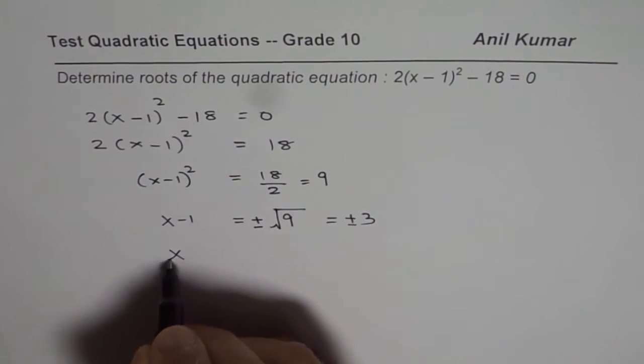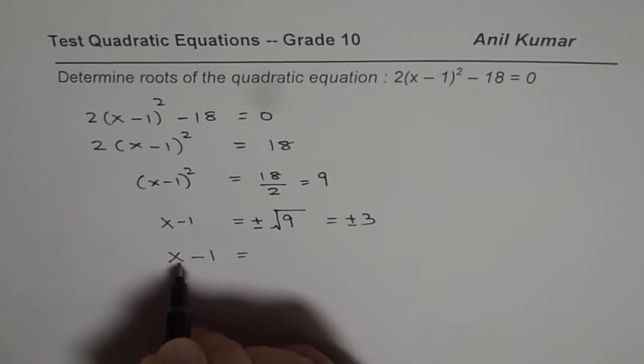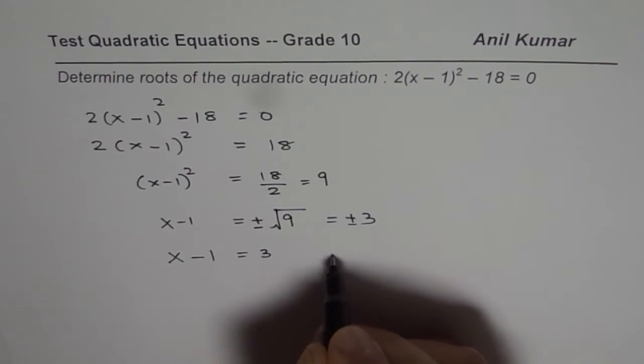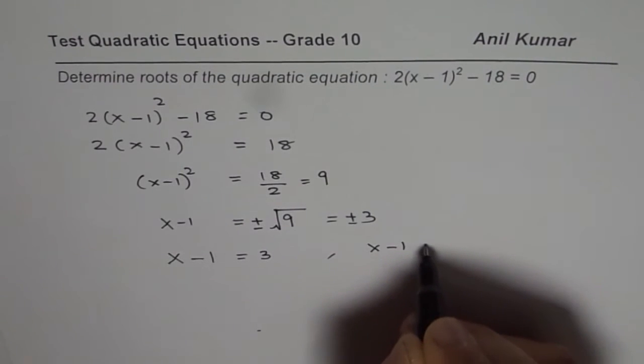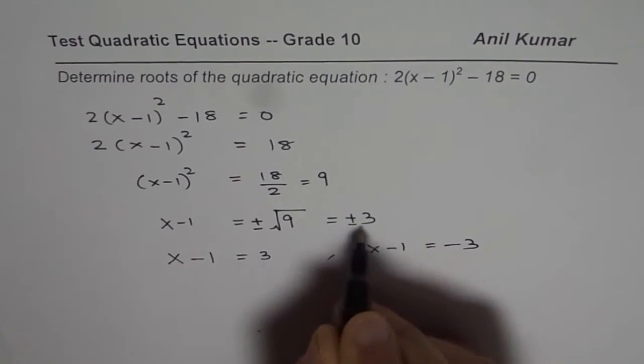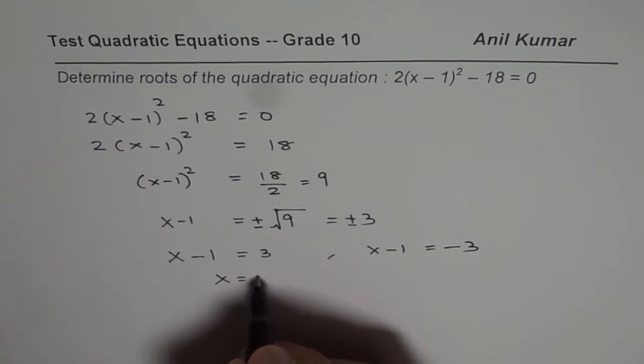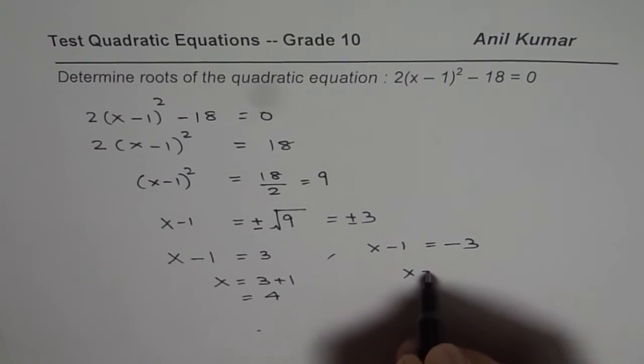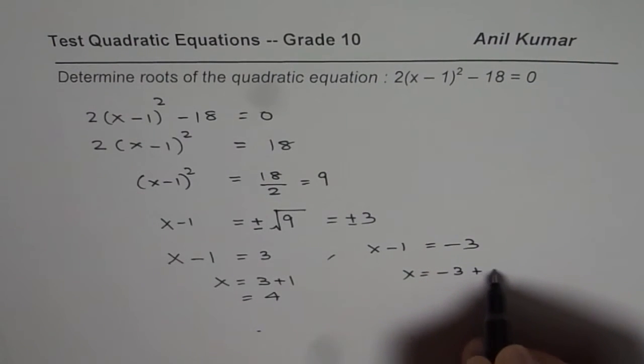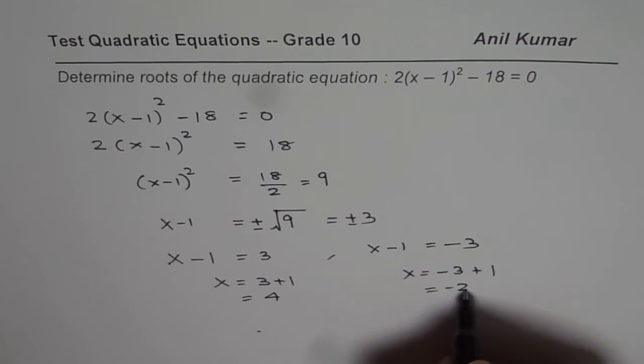So we basically have this equation. So we have x minus 1 equals to 3 and we also have x minus 1 equals to minus 3. So these are the 2 equations. Let us solve both of them. So here x equals to 3 plus 1, which is 4. Here x equals to minus 3 plus 1, which is minus 2.